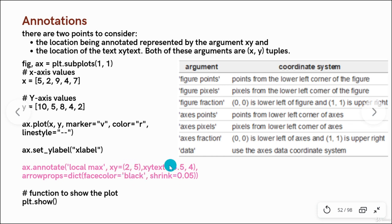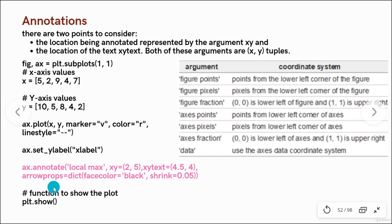With the help of the XYtext argument you are mentioning the location of the text, and with the help of the XY argument you are telling about the location you want to annotate. You can further add arrowprops — meaning arrows highlighting in that particular direction, with a color also. And then shrink is an additional parameter if you want to shrink the size of the arrow so you don't want to make it too large.